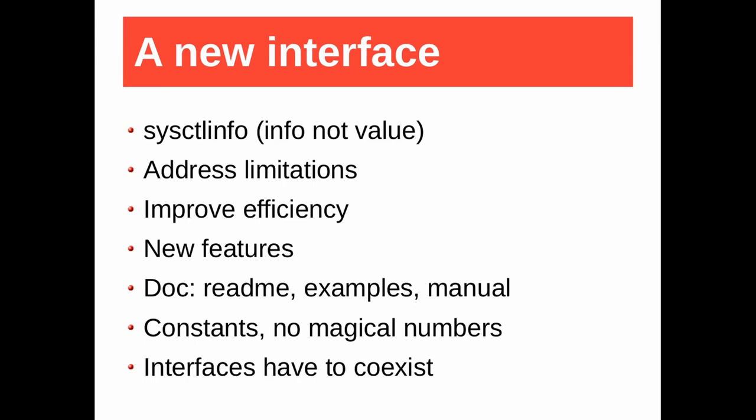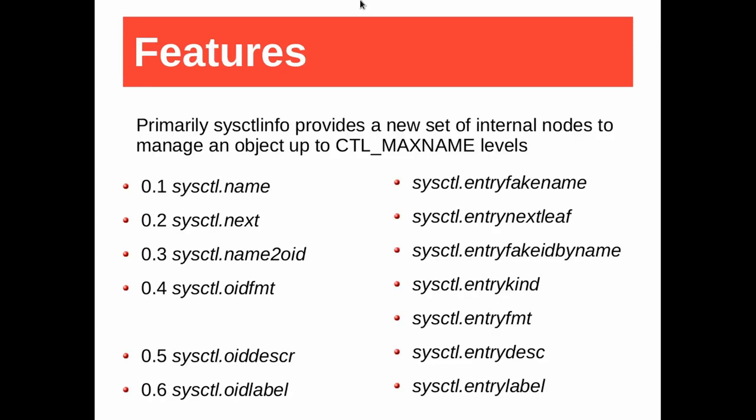The current interface does not meet my needs, so I wrote sysctl info. The main requirement is compatibility: libraries, tools, wrappers in Python, Haskell and so on use the current interface, so both interfaces have to coexist. Luckily this is an easy task because the interfaces are read-only. sysctl info provides a new set of nodes corresponding to the current interface to manage an object up to CTL_MAXNAME levels.